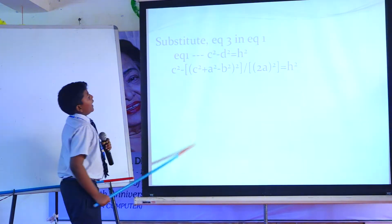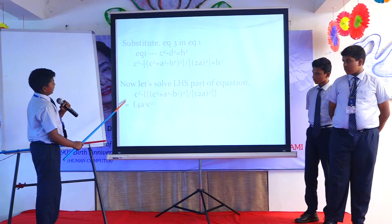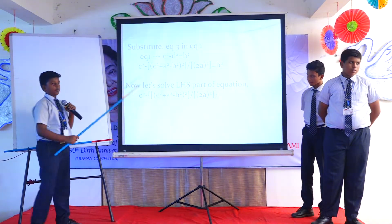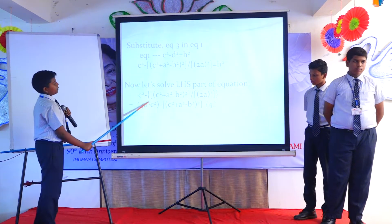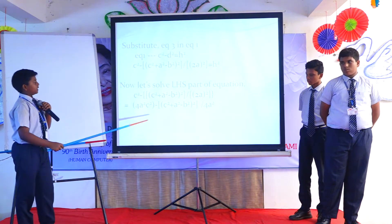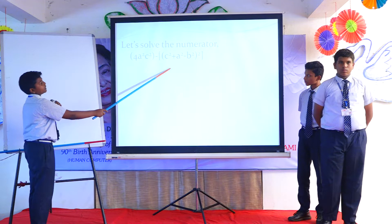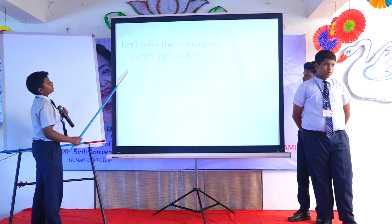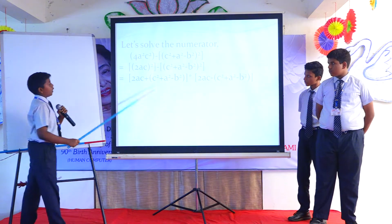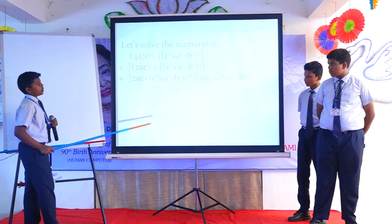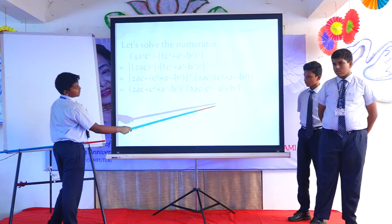So you get H squared equals c squared minus D squared. Take the LHS and find LCM. You get H squared equals c squared minus [(c squared plus A squared minus b squared) whole squared divided by (2A) squared]. Taking LCM gives H squared equals [4A squared c squared minus (c squared plus A squared minus b squared) whole squared] divided by 4A squared. Now let's solve the numerator: 4A squared c squared minus (c squared plus A squared minus b squared) whole squared. You can write this as (2Ac) squared minus (c squared plus A squared minus b squared) whole squared, which is in the form of X squared minus Y squared.